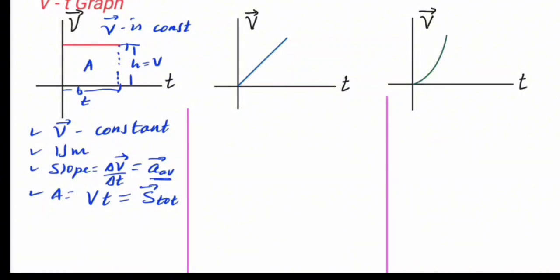The graph is inclined and straight. Since it is straight, some quantity is constant, and that constant value is acceleration. The change in velocity is constant, meaning the rate of change of velocity is constant. This is uniformly accelerated motion.